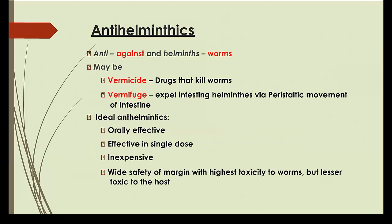Let's start anti-helminthic drugs. Anti means against and helminthic means worms, so any drug which acts against worms is called anti-helminthic. They can be of two types: vermicide and vermifuge. Vermicides are drugs that kill worms directly. Vermifuges cause problems with the parasitic movement — helminths lose their grip on the intestinal mucosa and are gradually expelled by the peristaltic movement of the intestine. It is analogous to bactericidal and bacteriostatic.